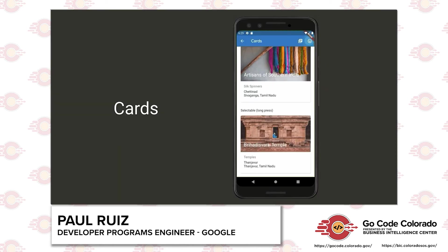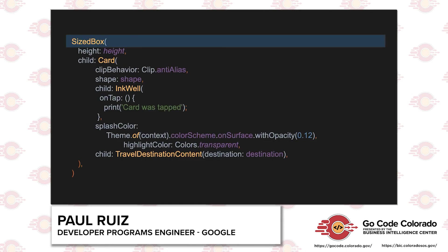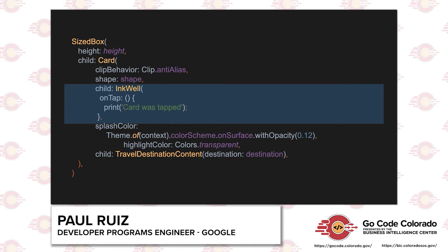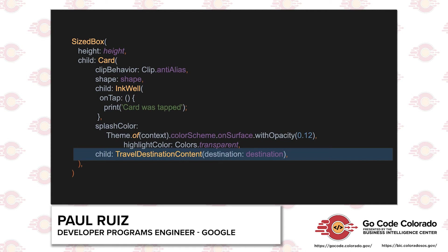To wrap up our discussion of widgets, let's briefly cover the card design pattern. A SizeBox gives each card a predefined height and wraps a child Card widget that sets general properties like shape and basic behaviors. The child of that card is an InkWell, which the card uses to figure out interactive touch areas. You can set a touch area color like the Android ripple effect by setting the splash and highlight colors, or set these to color.transparent if you don't want them. Finally, the InkWell has its own child — the actual content of the card the user sees, which can be any widget you want.